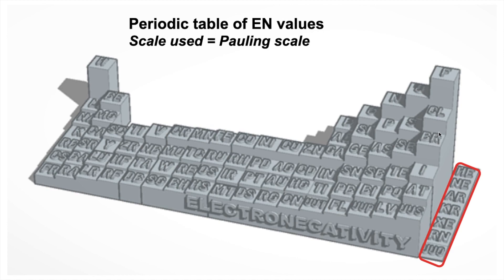To summarise: going across the periodic table left to right, electronegativity increases; going down from top to bottom, it decreases. So the highest electronegativity atoms are in the top right-hand corner. You don't need to know specific values — they would always be given in the exam — but it's worth knowing that fluorine is the most electronegative atom. The top three are fluorine, oxygen, and nitrogen, closely followed by chlorine. I get students to remember fluorine, oxygen, nitrogen because it's really helpful when you come onto hydrogen bonding.